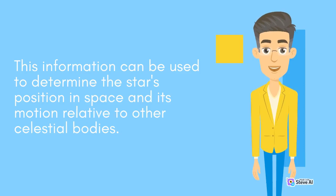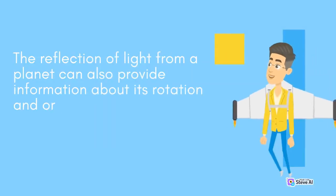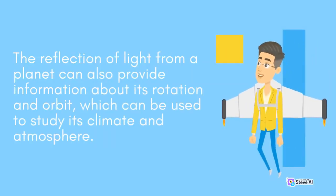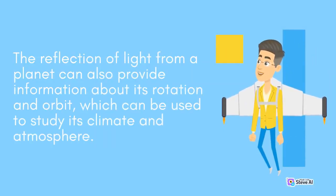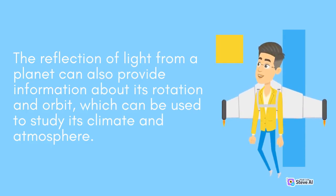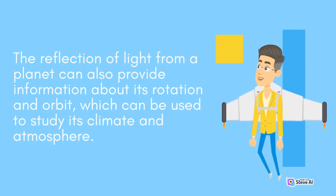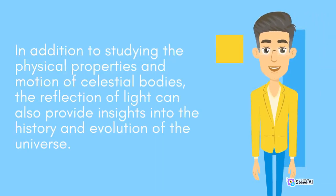The reflection of light from a planet can provide information about its position in space and its motion relative to other celestial bodies, as well as its rotation and orbit, which can be used to study its climate and atmosphere. In addition to studying the physical properties and motion of celestial bodies, the reflection of light can also provide insights into the history and evolution of the universe.